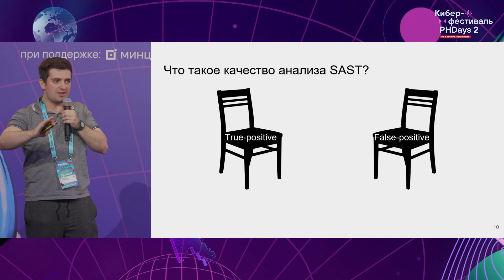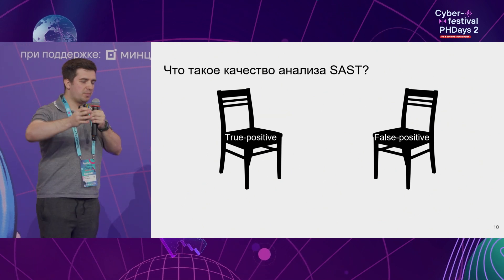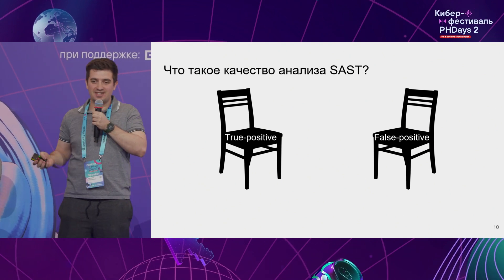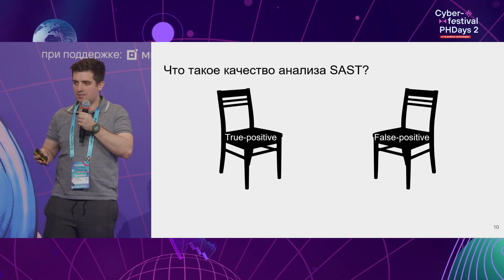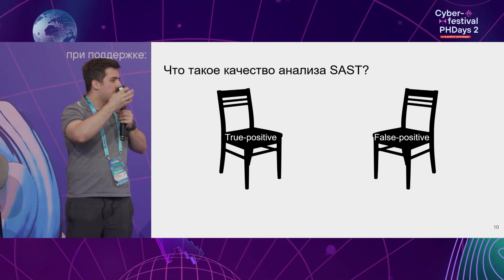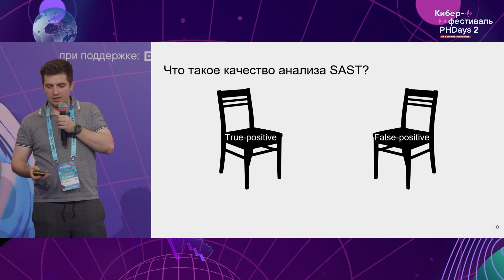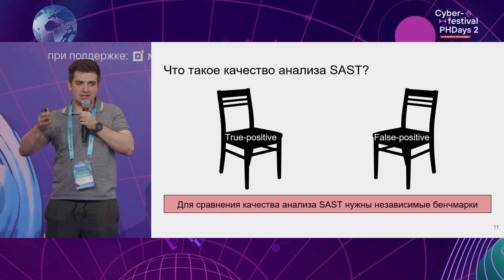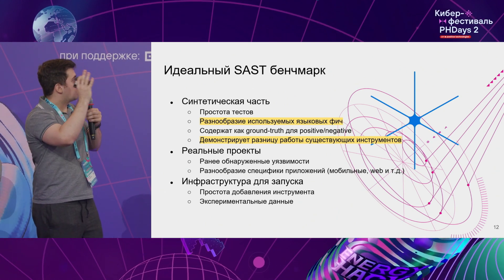For instance, we implement a service and purchase the most expensive, coolest SAST solution. We apply it and get 1,500 warnings. We roll up our sleeves and start working on these warnings. It turns out that 99% of cases signaled by SAST are virtually impossible in practice. False positives are an important indicator — a high number of false positives leads to the impossibility or impracticality of using a tool in production. For proper quality analysis of SAST solutions, we require independent benchmarks, and at present there are some.